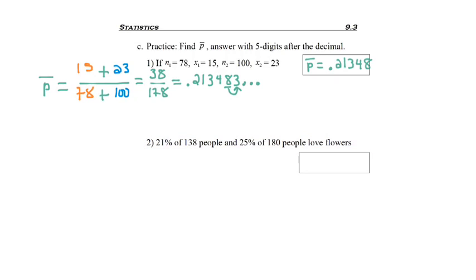Now on to my second problem, where I'm told that 21% of 138 people and 25% of 180 people love flowers. Just eyeballing it, since 180 is bigger than 138, my answer is going to be closer to 25% than 21%, but I still need to go ahead and use the formula to find that exact percentage.